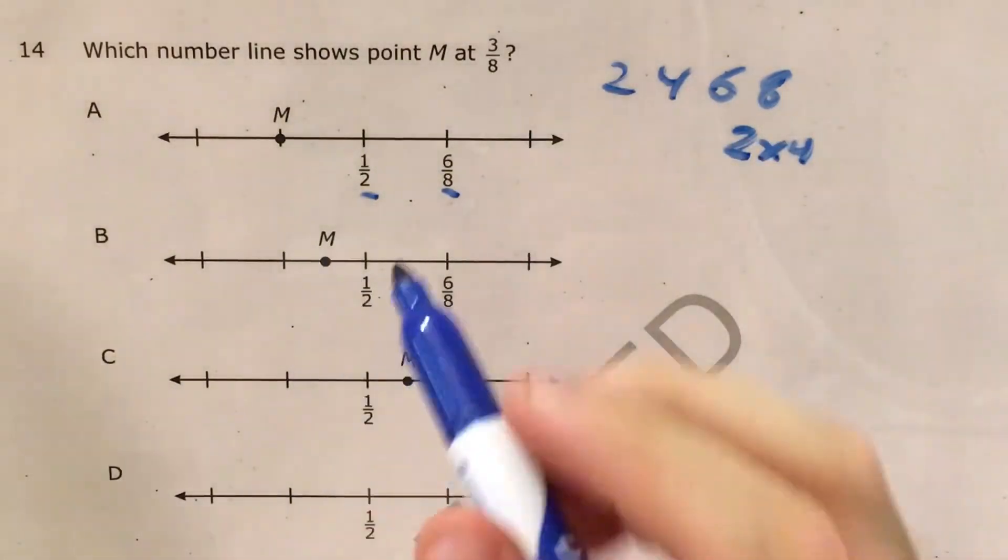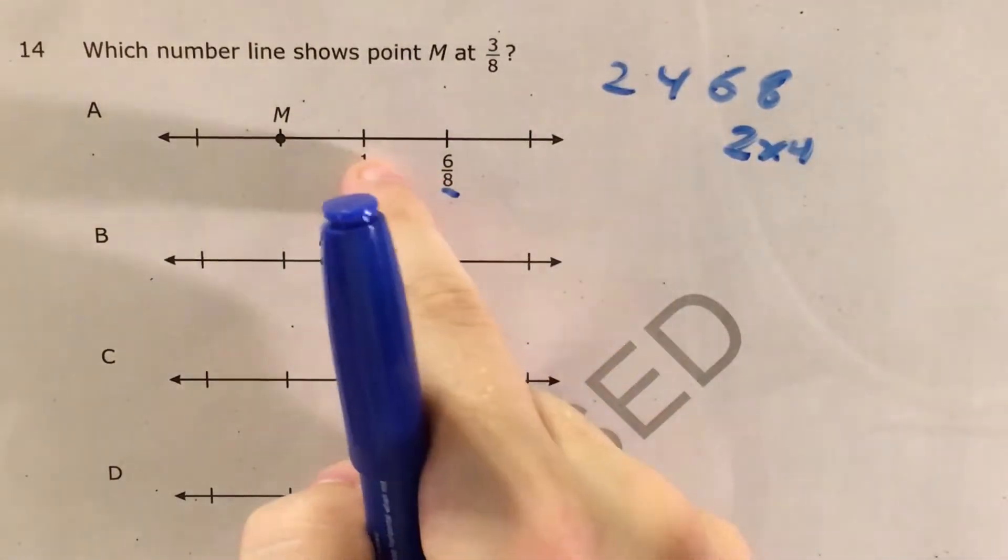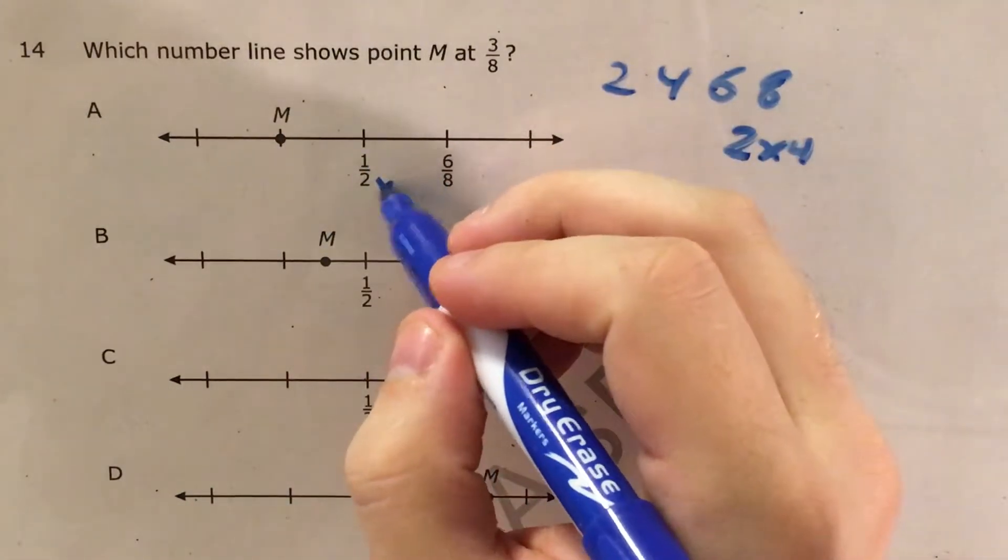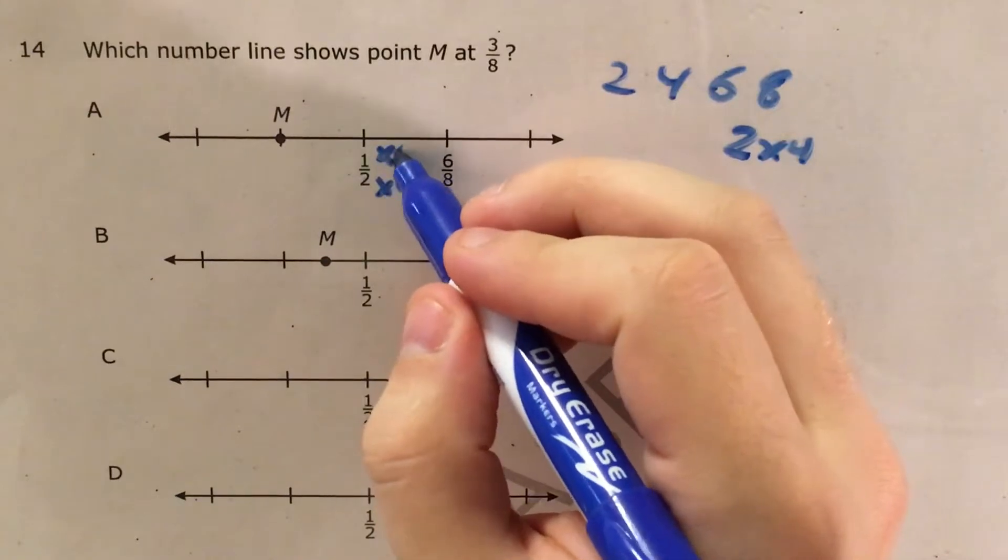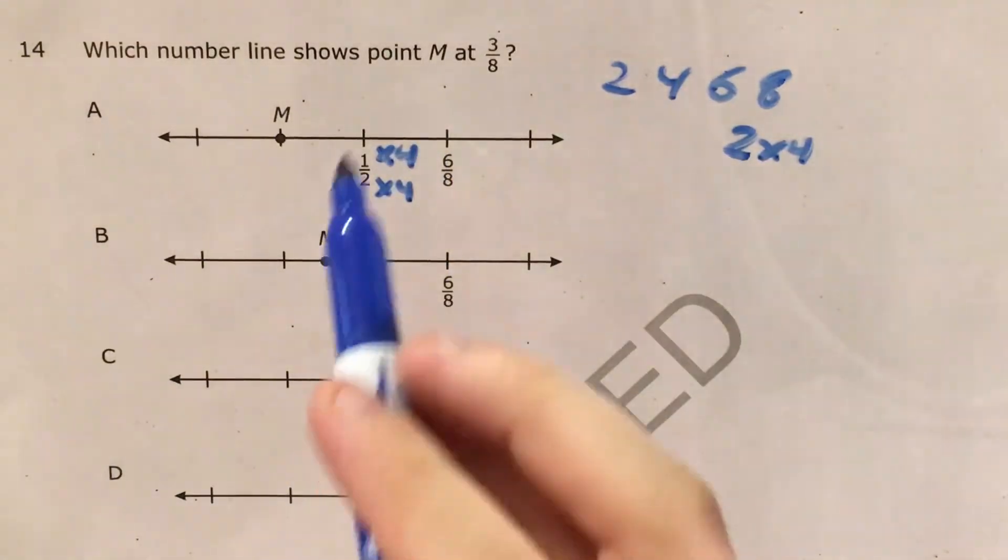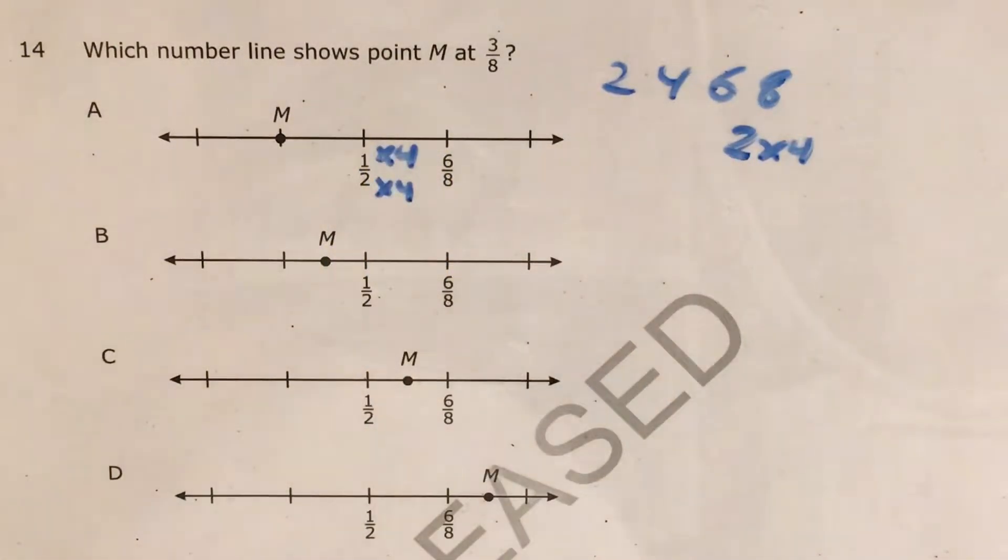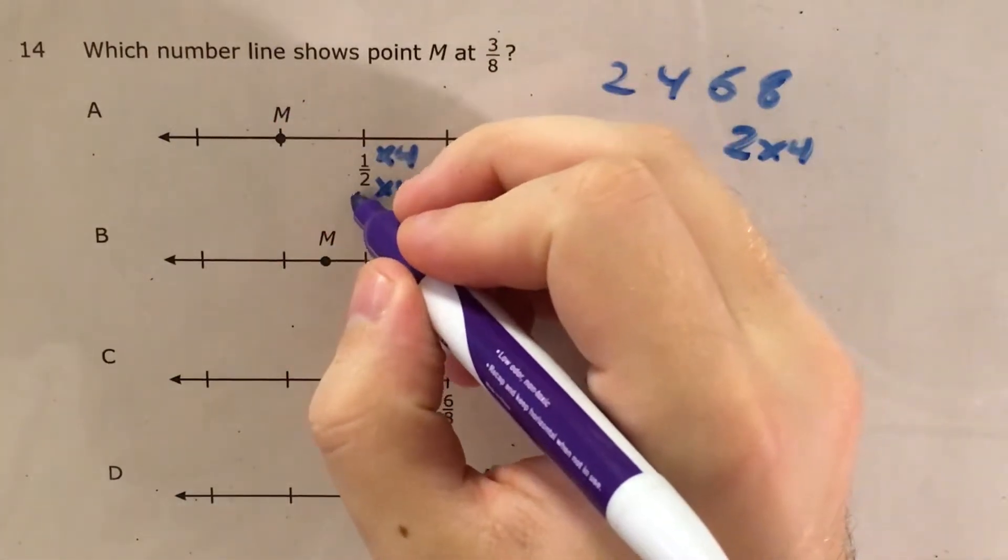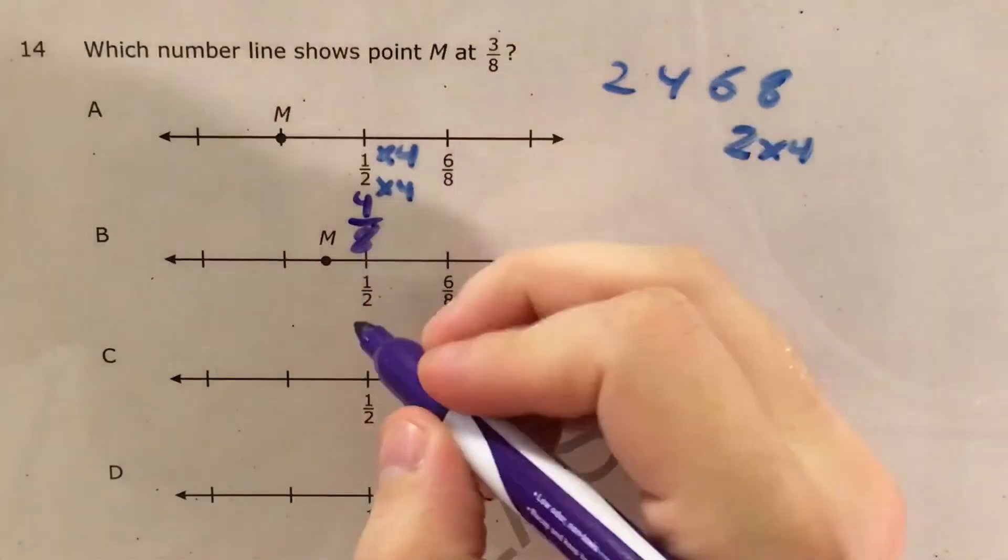So two goes into eight four times, which means that if I want to get one-half into some number of eighths, I need to multiply by four on the bottom and by four on the top. So one times four gets me four, two times four gets me eight. So I know that one-half is the same thing as four-eighths.